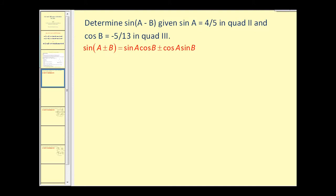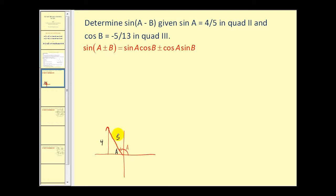We want to determine the sine of a minus b, given that sine a equals four-fifths in the second quadrant and cosine b equals negative five-thirteenths in the third quadrant. Sketching angle a in standard position with its terminal side in the second quadrant, we call the reference angle a prime. Since sine a equals four-fifths, the opposite side is four and the hypotenuse is five. This is a 3-4-5 right triangle, so the adjacent side is negative three since we are in the second quadrant.